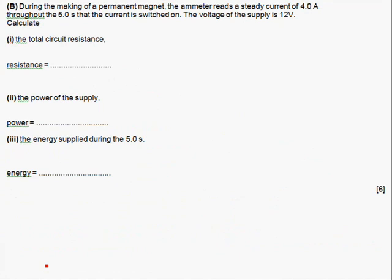During the making of a permanent magnet, the ammeter reads a steady current of 4 amps throughout the 5 seconds that the current is switched on. The voltage of the supply is 12 volts. Calculate the total circuit resistance. Have a go at this now.